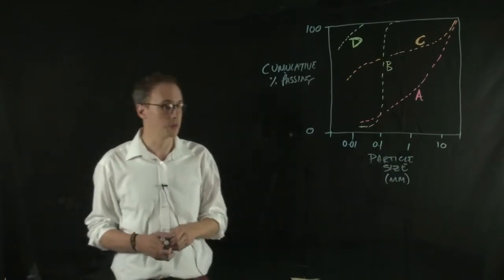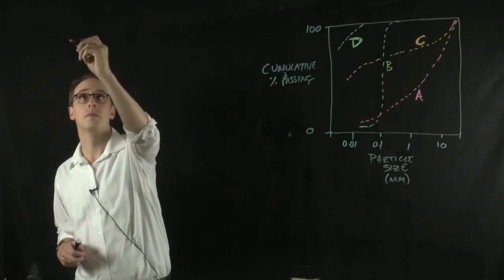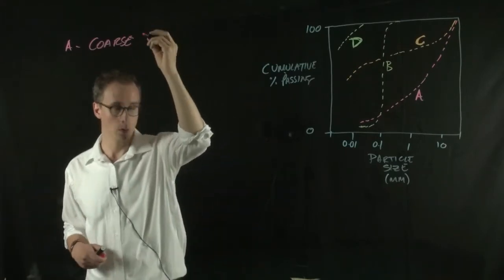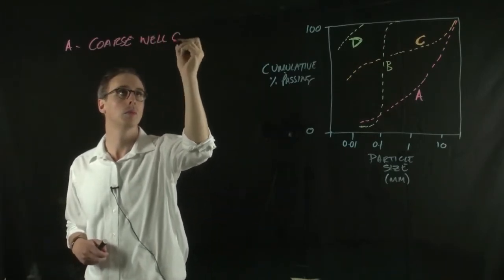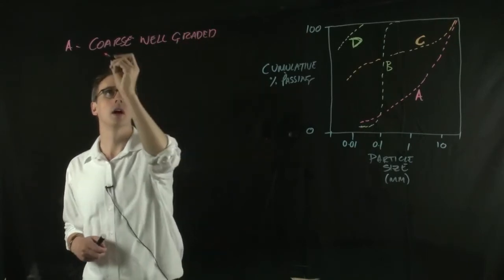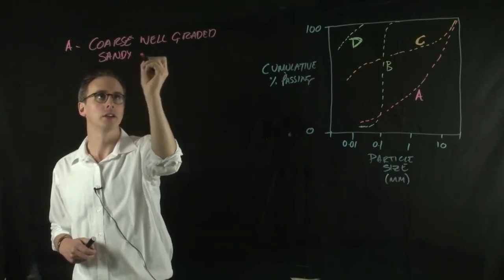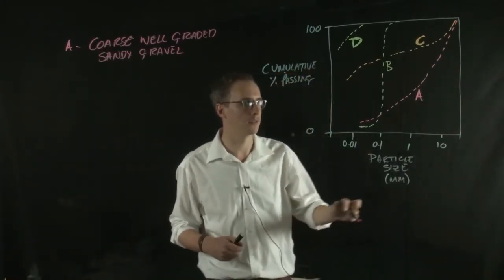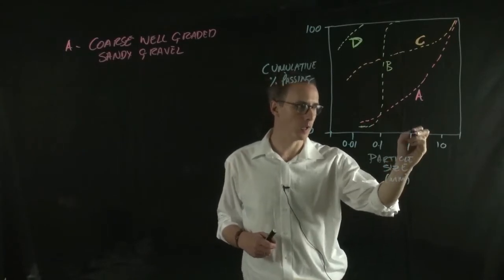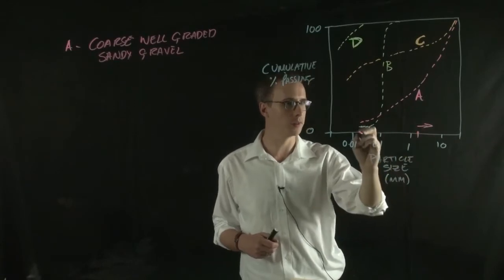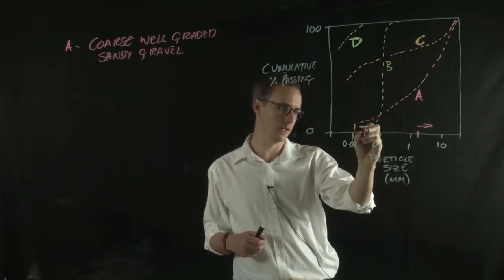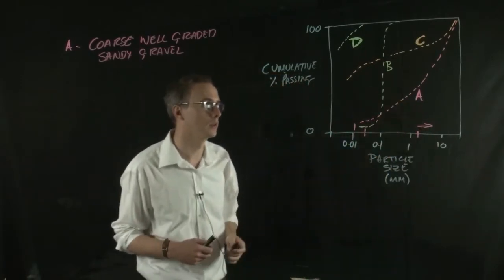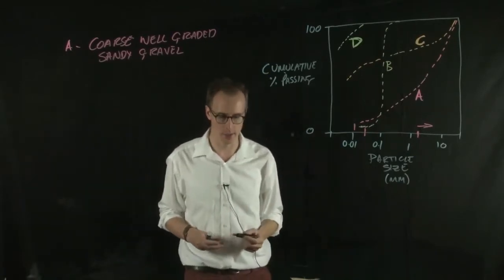Line A we'd describe in this case as a coarse, well-graded, sandy gravel. You can kind of see that from just eyeballing the graph. We know that gravel size is around here and sand is sort of around here somewhere. So we know there's sand and gravel within line A, so we're definitely sure that there must be a mixture between sand and gravel.